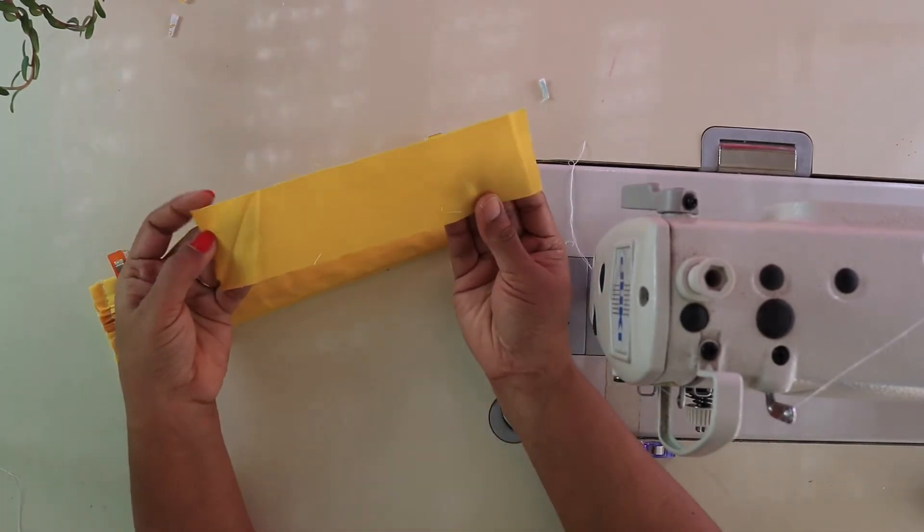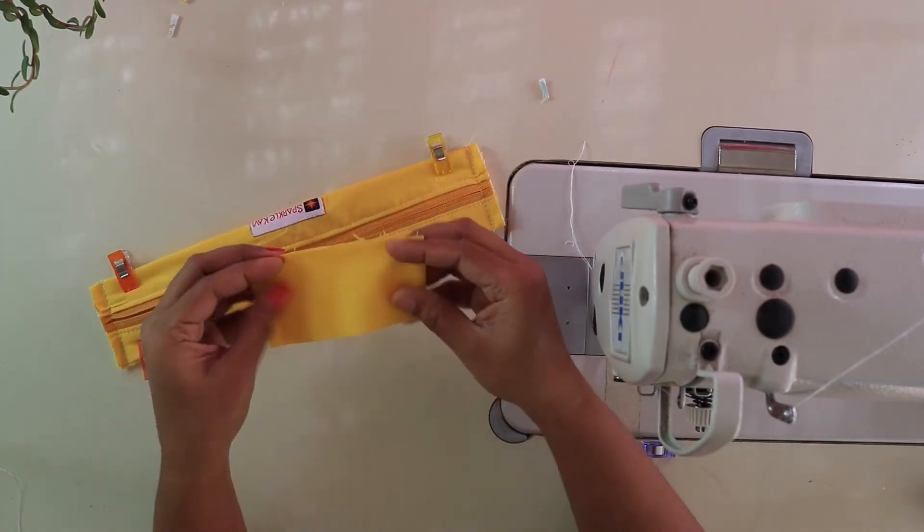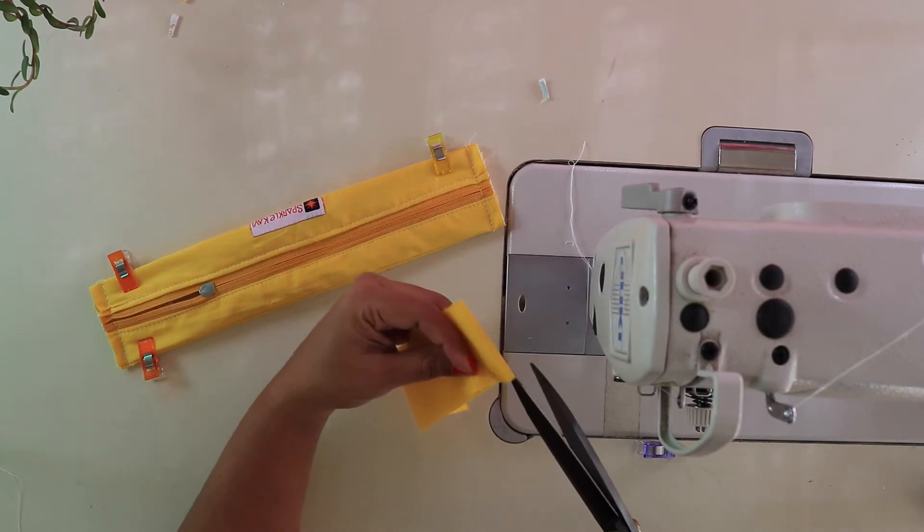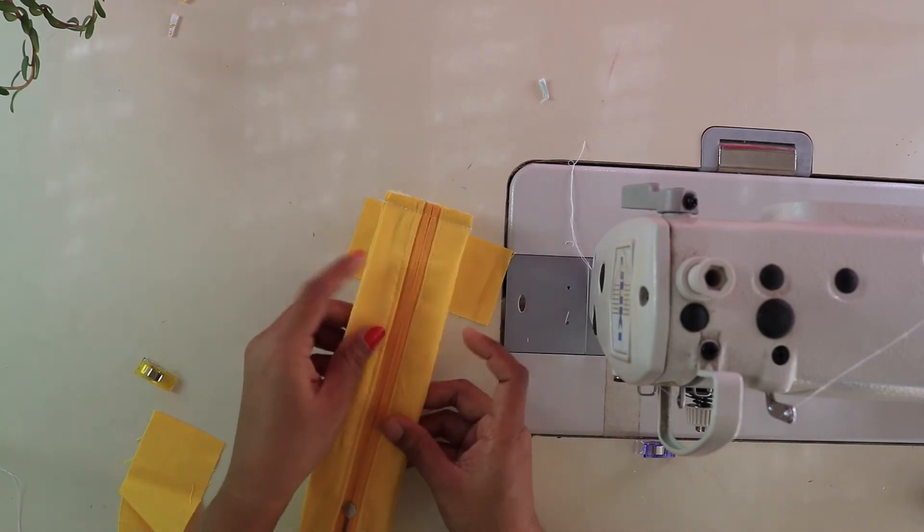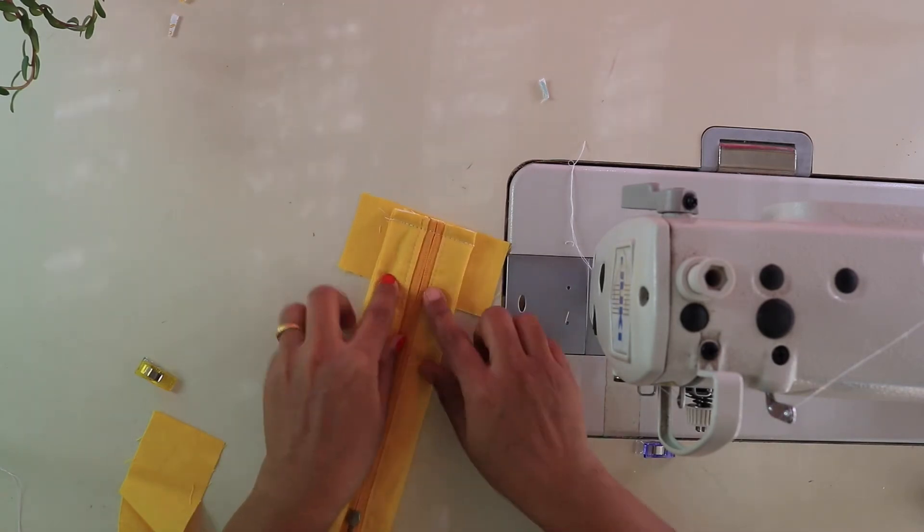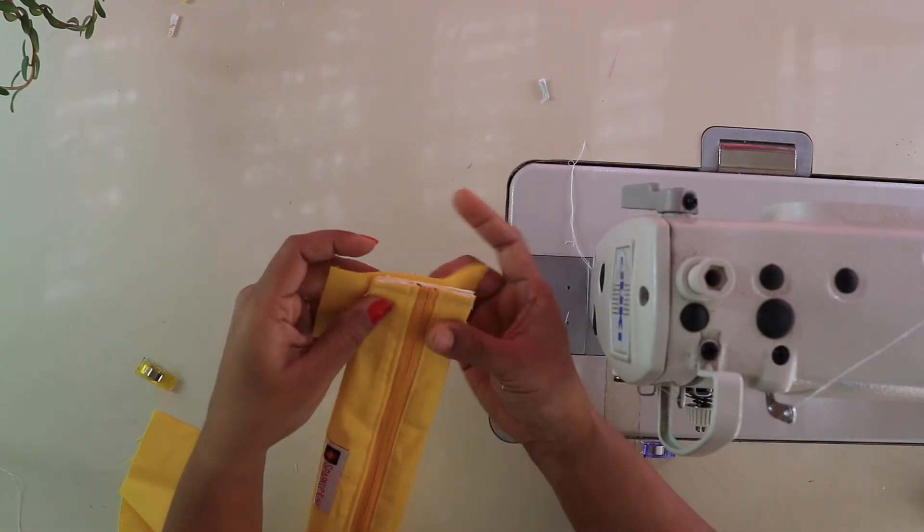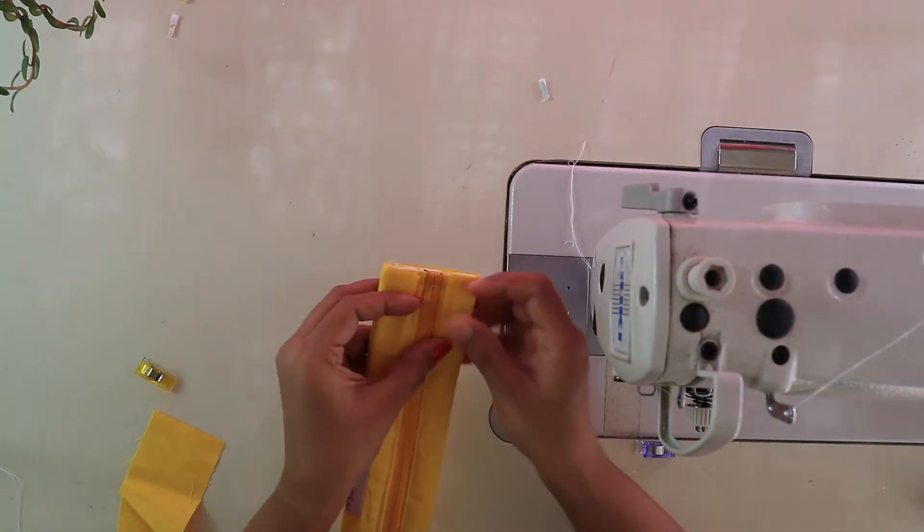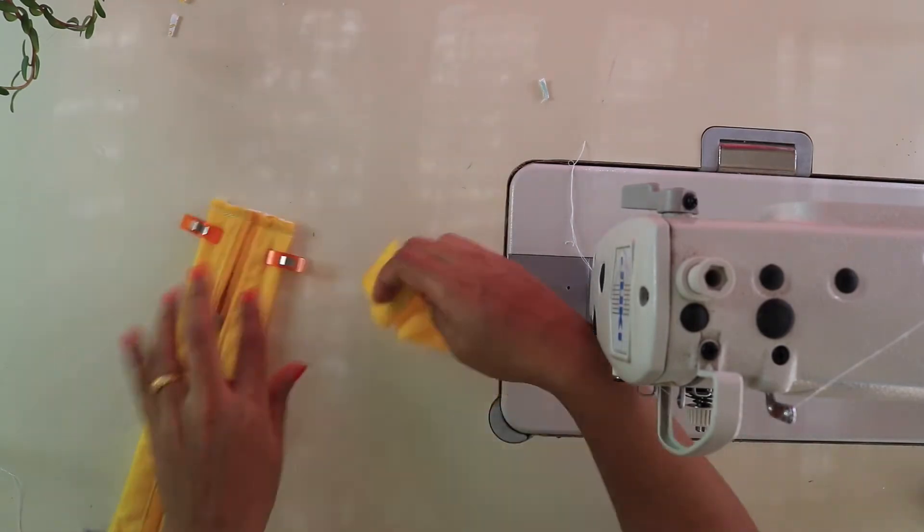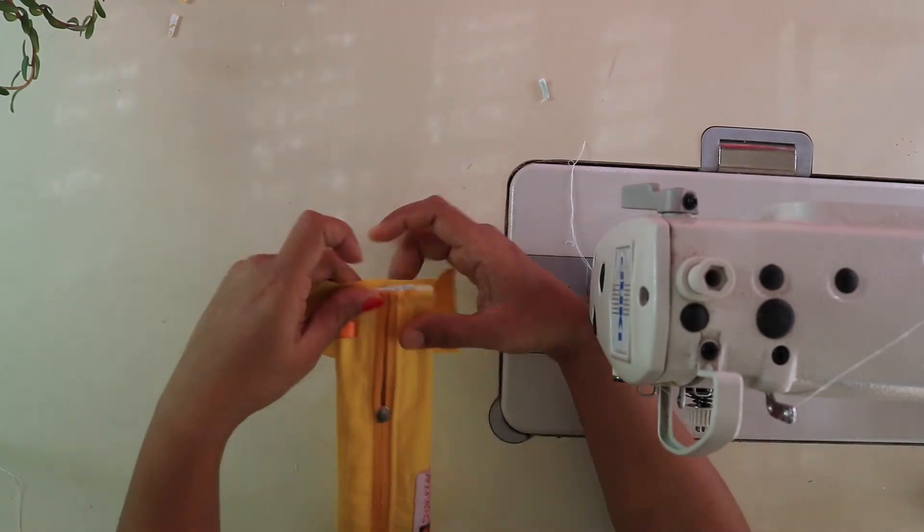Now, take your binding fabric and cut it in half. Then lay your binding fabric flat with right side facing up, then place the pouch approximately in the center. Then wrap the binding around the sides and pin. Repeat the same for the opposite side also.